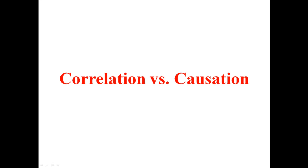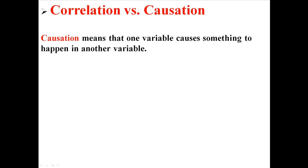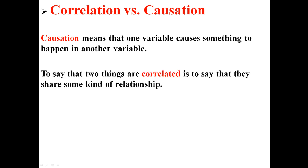This is going to be a very short but important lecture on the difference between correlation and causation. Correlation means that one variable causes something to happen in another variable. To say that two things are correlated is to say that they share some kind of relationship.